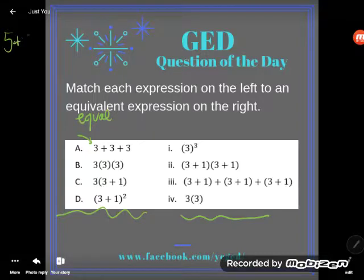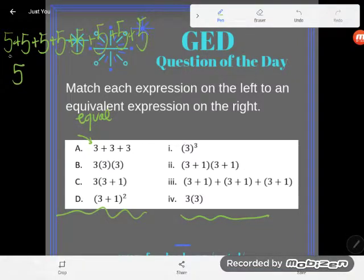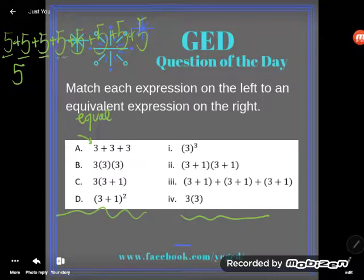If you're just adding up the same number, I'll demonstrate with fives. You could write 5 + 5 + 5 + 5, or you could use a shortcut and talk about how many times you added five. You added five one, two, three, four, five, six, seven, eight times in this case. So that'd be the same as 5 × 8.